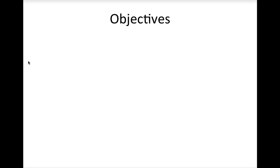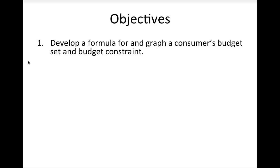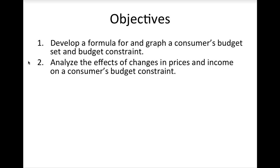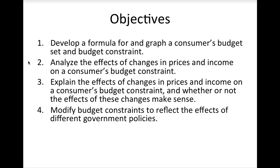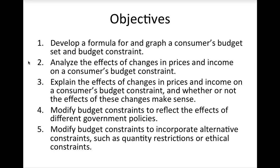By the end of this chapter, you should be able to do the following things. First, you should be able to develop a formula for and graph a consumer's budget set and budget constraint. Second, you should be able to analyze the effects of changes in prices and income on a consumer's budget constraint. Third, you should be able to explain those effects and whether or not they make sense. Fourth, you should be able to modify budget constraints to reflect different government policies, and finally, to incorporate alternative constraints such as quantity restrictions or ethical constraints.